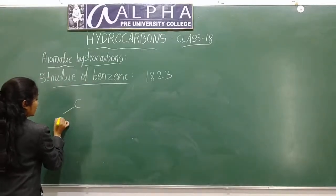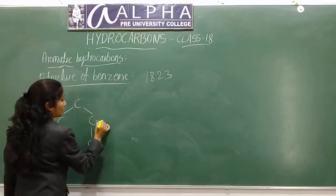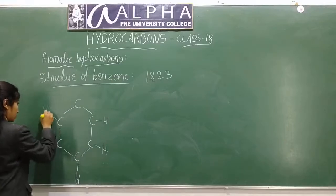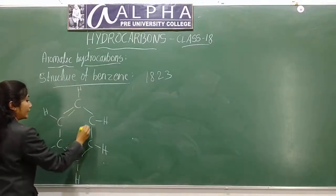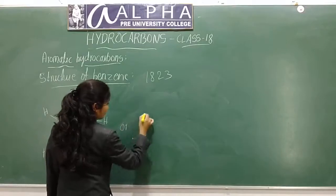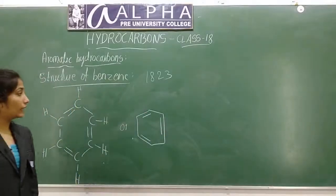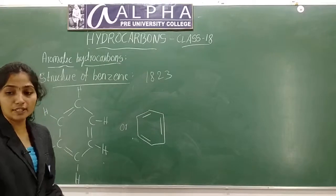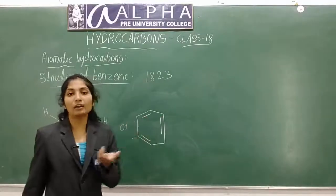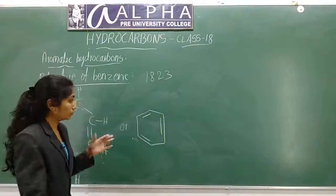Kekulé's structure had six carbon atoms arranged in a ring, each containing one hydrogen, with alternate double bonds. This was the Kekulé structure. But if this were the true structure, treating benzene with bromine should give a di-substituted product.